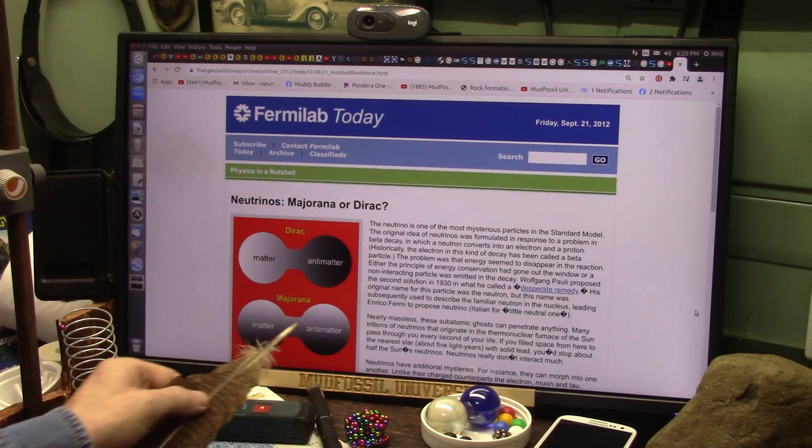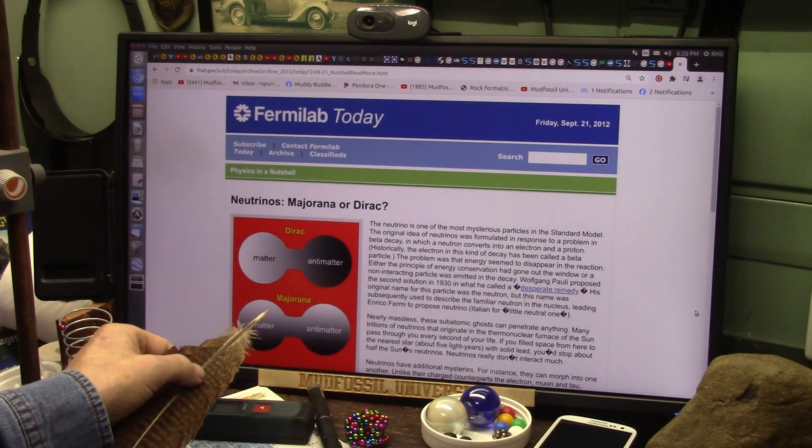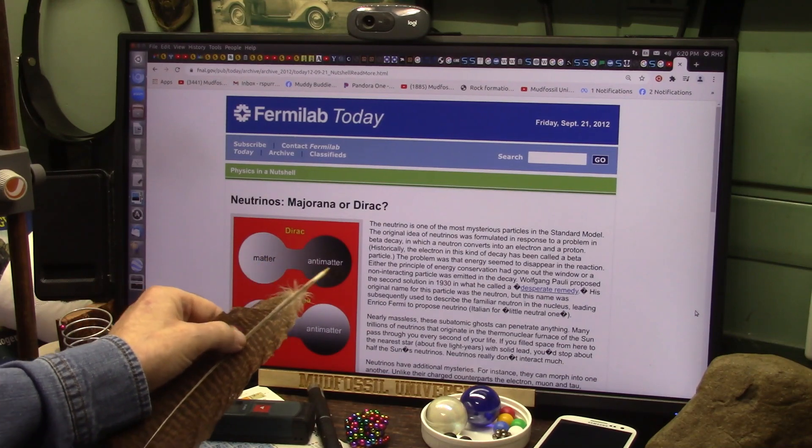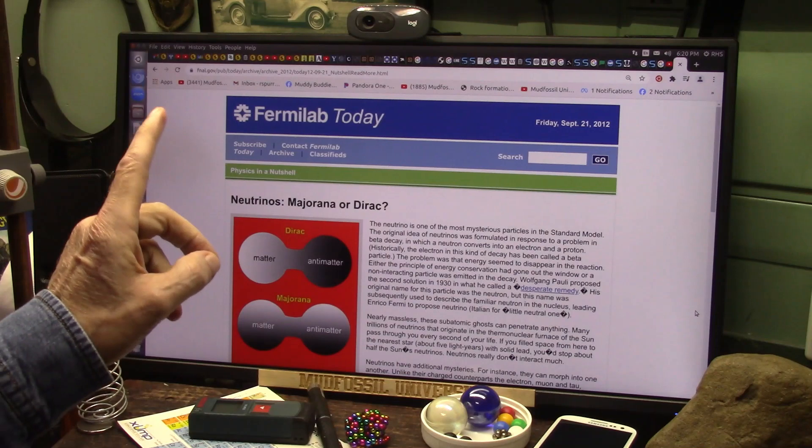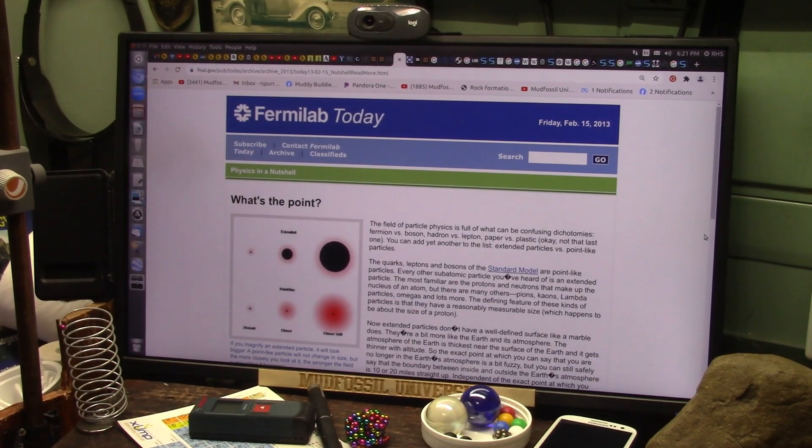Then they come in different shades and they call them majorana. This is really what a neutrino is - the black and white together. This is 12 years ago, watch this.